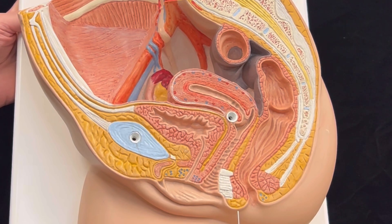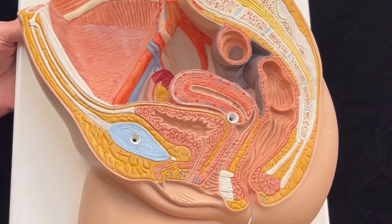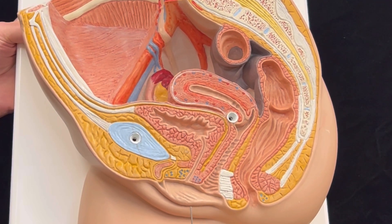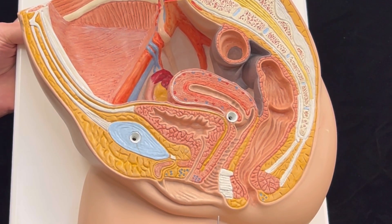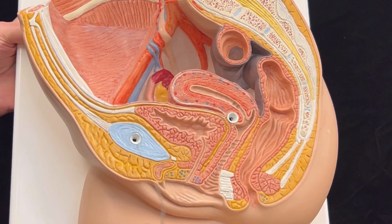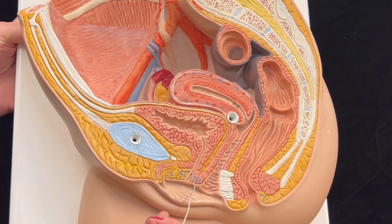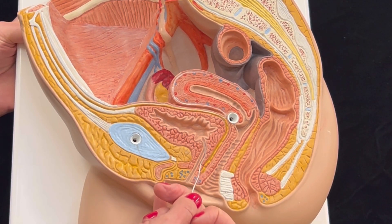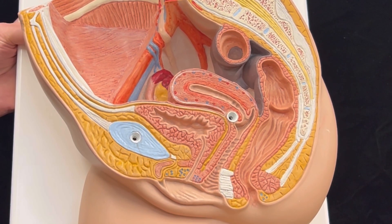In males, we have the reproductive system together with the urinary system, because in males we have the male urethra being shared by both the reproductive and urinary system. That's not the same case in females, because we see here the urethra and here we see the vaginal canal.